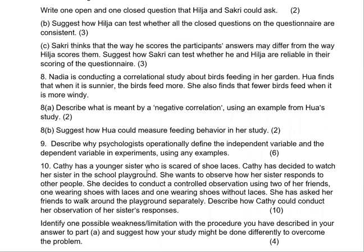The last question: KT has a younger sister who is scared of students. KT has decided to watch her sister at the playground at school and wants to observe how her sister responds to other people. She decides to conduct a controlled observation using two of her friends — one wearing shoes and one without. Describe how KT could conduct her observation of her sister's responses, identify one possible weakness or limitation with the procedure, and suggest how the study might be done differently to overcome that problem.